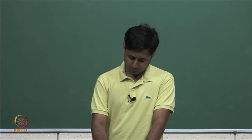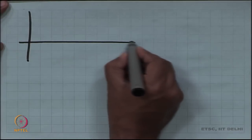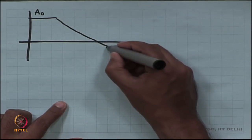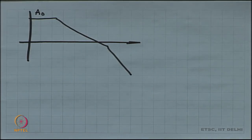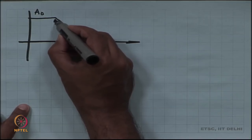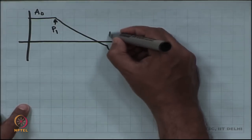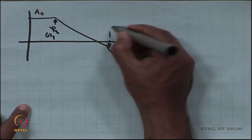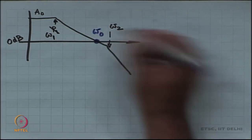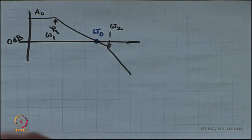If you look back at the Bode plot, you have a system that is going to look like this. This is the open loop op-amp. It is a two-pole system, probably with a right half plane zero that you have cancelled out. So we do not bother about the zero here. You have got a pole omega 1 and you have got another pole omega 2. And in between, you have this point omega naught, and at this point the gain of the op-amp is 1 or 0 dB.